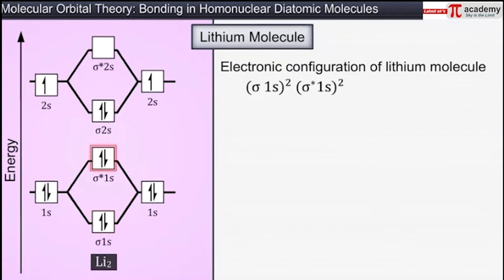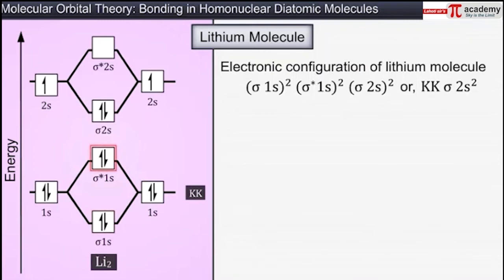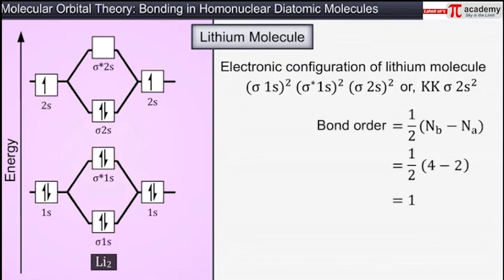The electronic configuration of a lithium molecule is sigma 1s² sigma star 1s² sigma 2s². This configuration is also written as KK sigma 2s², where KK represents the closed K shell structure sigma 1s² sigma star 1s². As lithium has 4 electrons in its bonding molecular orbital and 2 electrons in the antibonding molecular orbital, the bond order of lithium is calculated to be half of (4 minus 2), which is equal to 1.